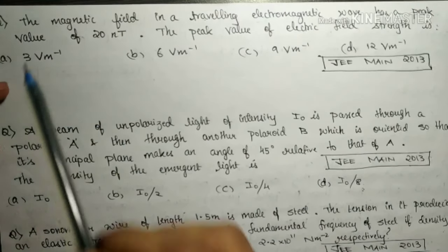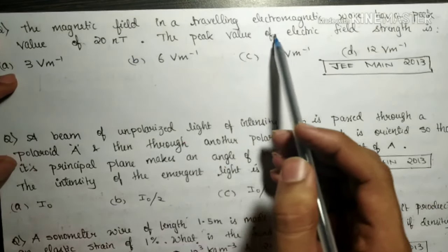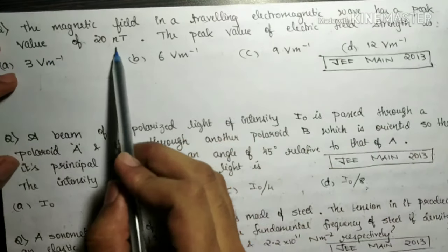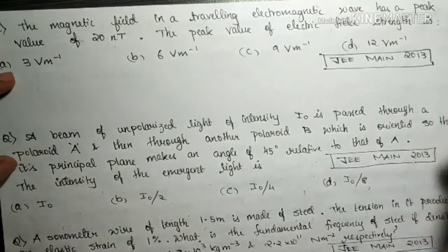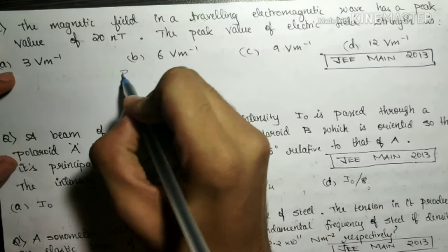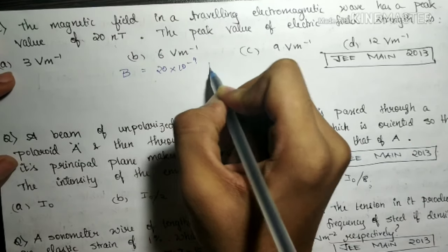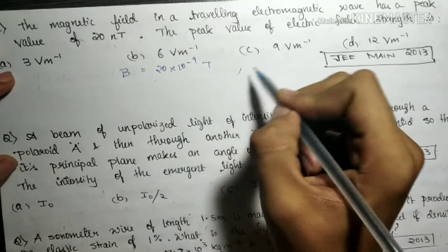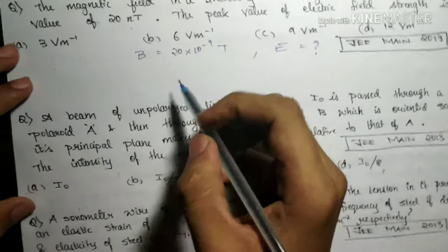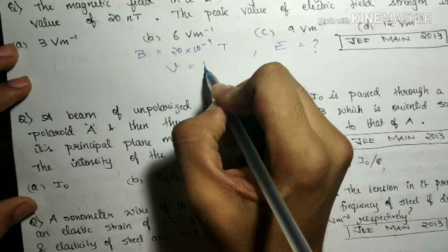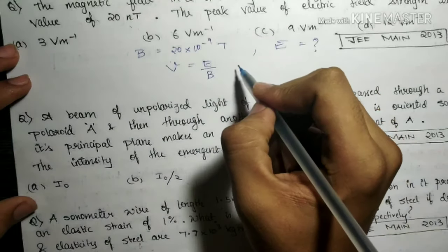Let's begin with the first question, which says: the magnetic field in a traveling electromagnetic wave has a peak value of 20 nanotesla — what is the peak value of electric field strength? They have only given the value of B, that is 20×10⁻⁹ tesla, and we have to find E. We know from the velocity selector equation that v = E/B.